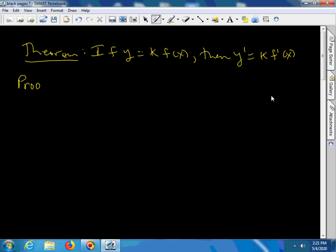The proof is just going to follow from the definition. y prime is equal to the limit as h or delta x goes to 0 of y of x plus delta x minus y of x. Oh, y of x plus h. All over h.